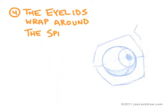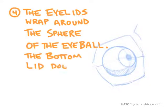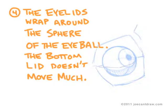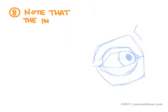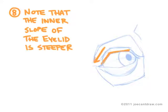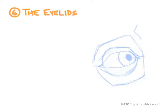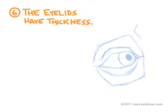The eyelids also wrap around the sphere of the eyeball. The bottom lid doesn't move much, but you can think of the top lid as a curtain that opens and closes over the eye. Note that the inner slope of the eyelid is much steeper than the outer slope — this is an easy tip to remember while drawing. Also note that the eyelids have some thickness to them; they have enough thickness that they can even cast a tiny shadow in some circumstances.